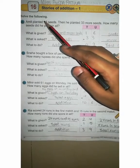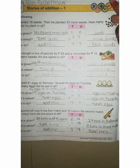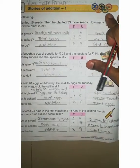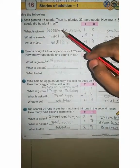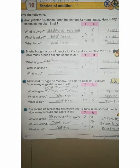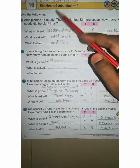Now you understand, Amit already planted 16 seeds and more plant 33 seeds. Now here, how many? It means total asking. How many seeds did he plant in all? It means do addition and here, question given seeds and more seeds.